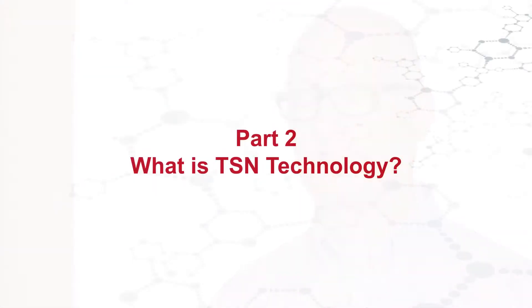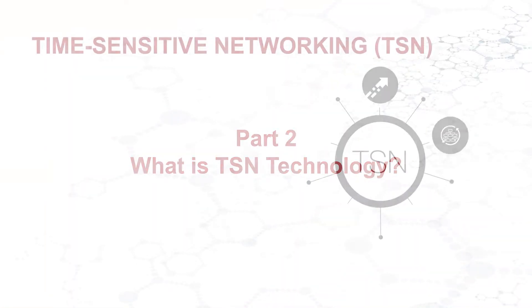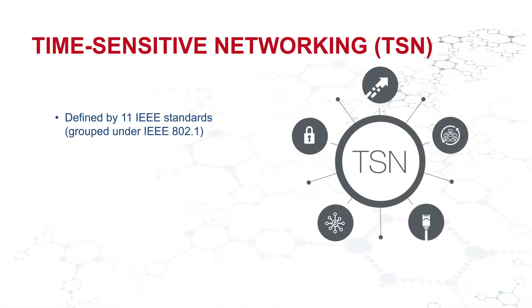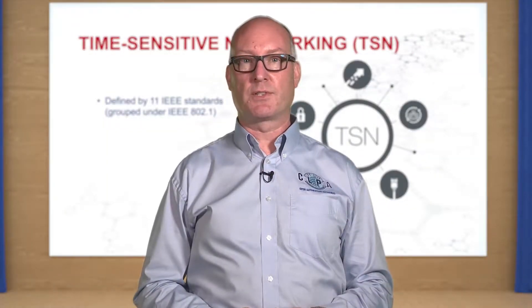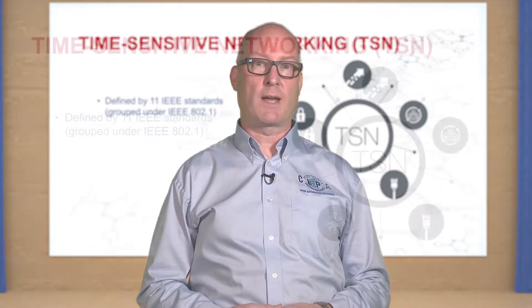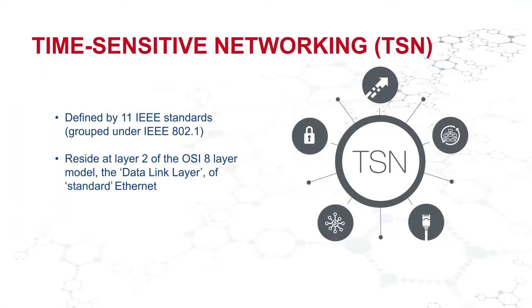Let's take a closer look at what time-sensitive networking actually is and how the technology works. Time-sensitive networking is defined by 11 different IEEE standards, collectively known as IEEE 802.1. There are eight different levels used to define Ethernet — this is called the OSI model. TSN refers to layer 2, which means it's right down at the data link layer, one level above the actual physical media of the network itself.